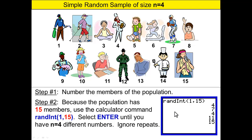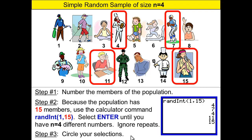In Ms. Borlaug's example here on the right, notice that the four repeated and she did an extra enter to get four different numbers. Step three: we circle our selections, circling 4, 7, 11, and 15.